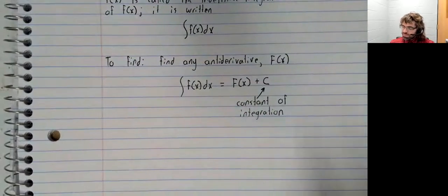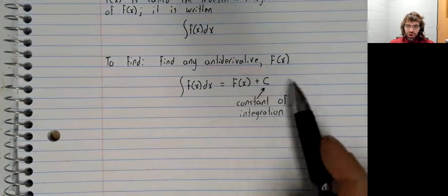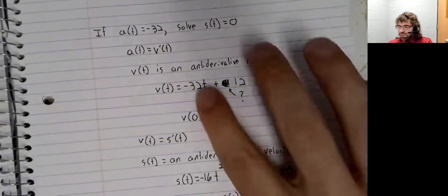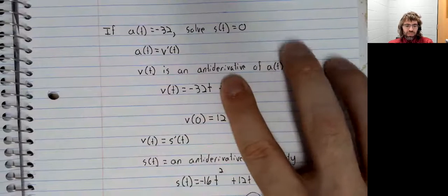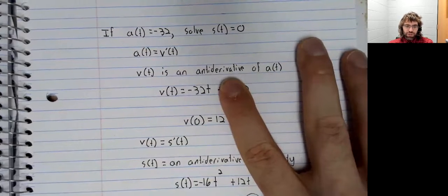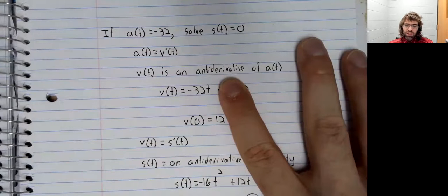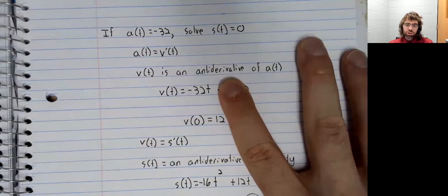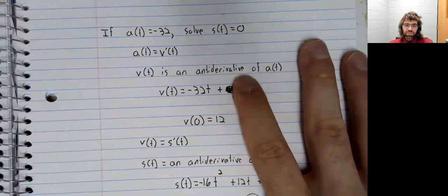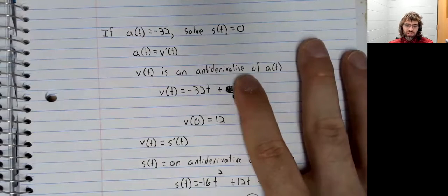We sort of saw this in our hot air balloon example. When we found the velocity, I said that this is an antiderivative, but maybe not the one we were looking for. And then I said any other antiderivative has to look like this plus a constant.